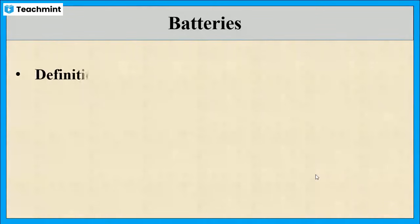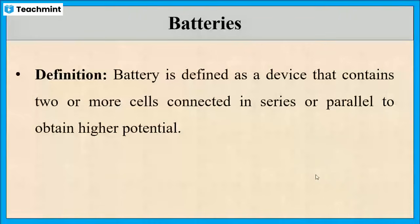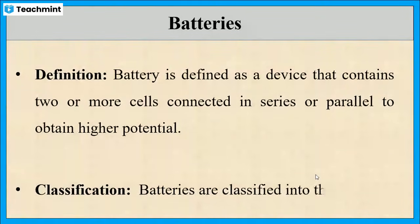Now let us see the actual definition of batteries. It is a device that contains two or more cells connected in either series or parallel to obtain higher potential. These are classified into three types: primary batteries, secondary batteries, and reserve batteries.